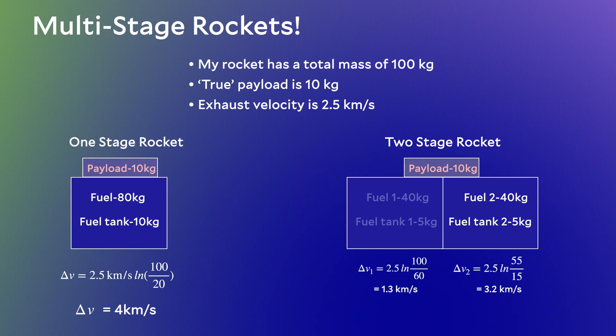Again, 3.2 km/s alone is not very impressive, but now I can add those two numbers together. I started on the launch pad at zero kilometers per second. I gained 1.3 km/s in the first stage and 3.2 km/s in the second. Adding them together, I get 4.5 kilometers per second. That's half a kilometer per second — about a thousand miles per hour — that we gained just by adding rocket staging, by getting rid of 5% of our mass partway through launch. That's huge.